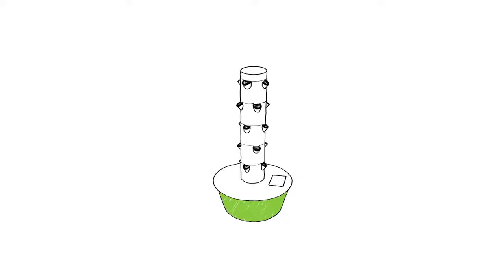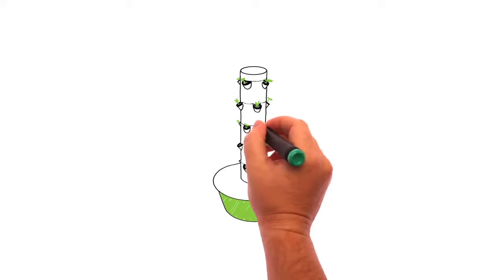The process begins once the seedlings have been placed in your Tower Garden. Here they will be nourished with Tower Tonic nutrient solution.